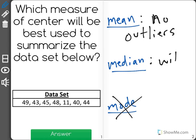And a median is a good one if there are outliers, because what it will do is it will help us show the center without being affected greatly by the outliers.